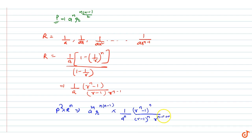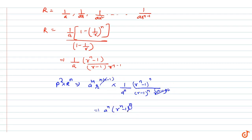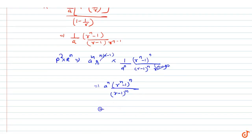Then we get A to the power n — this term cancels out — and here we get R to the power n to the power n upon R minus 1 to the power n, which equals S to the power n.